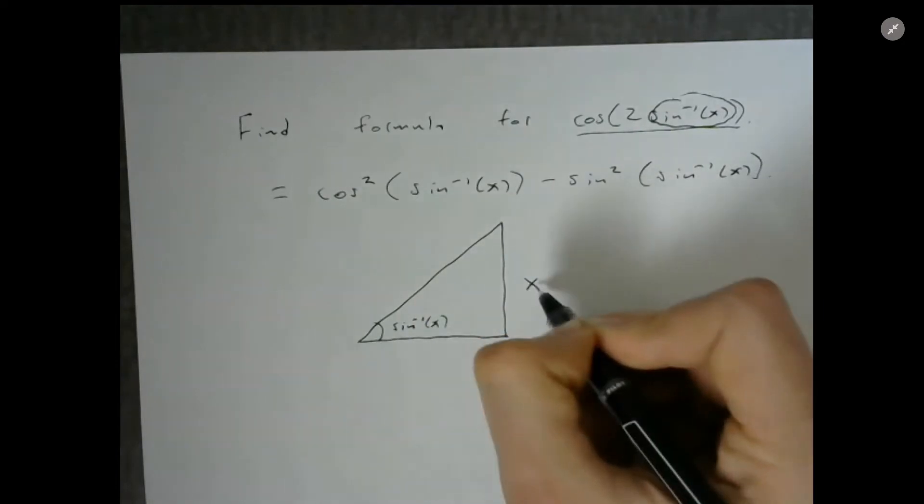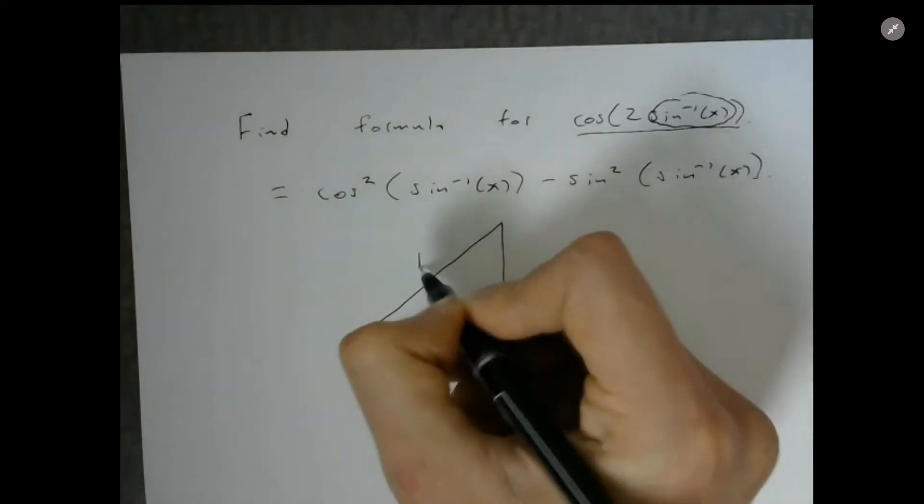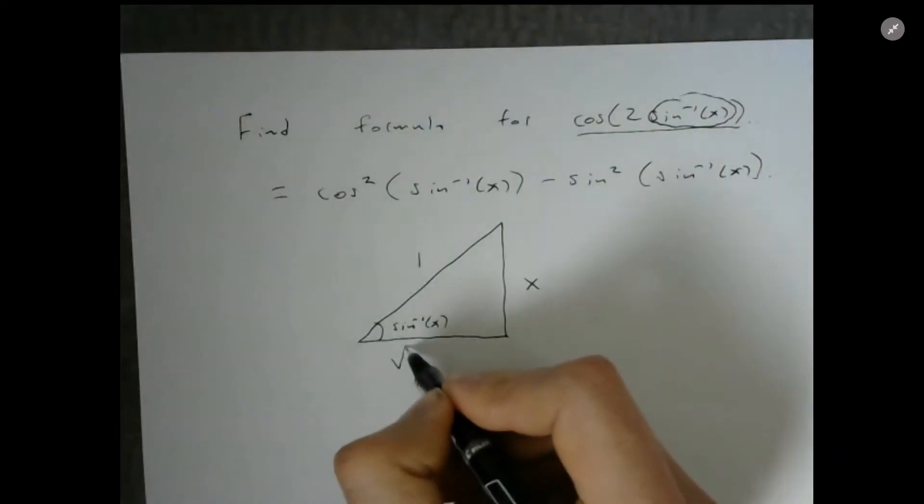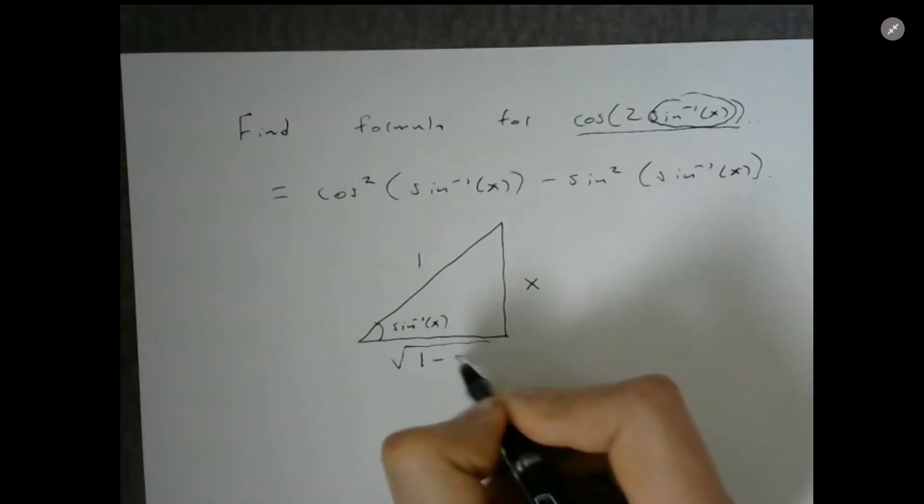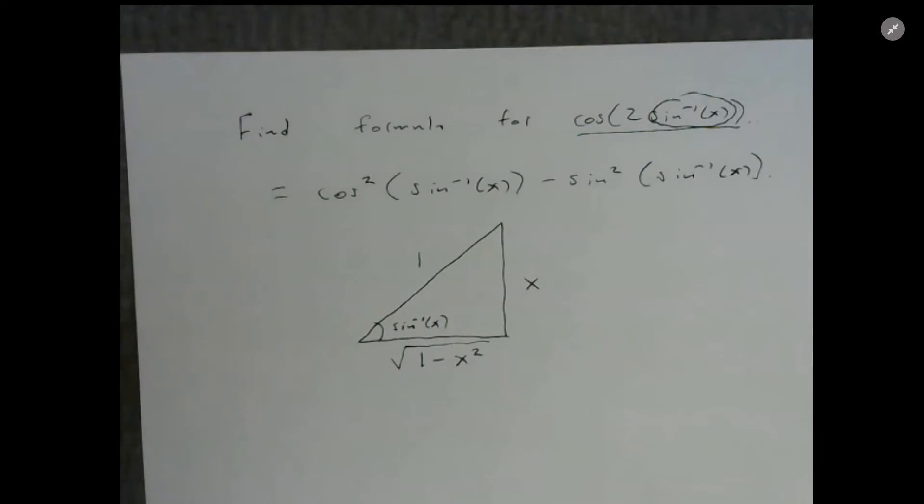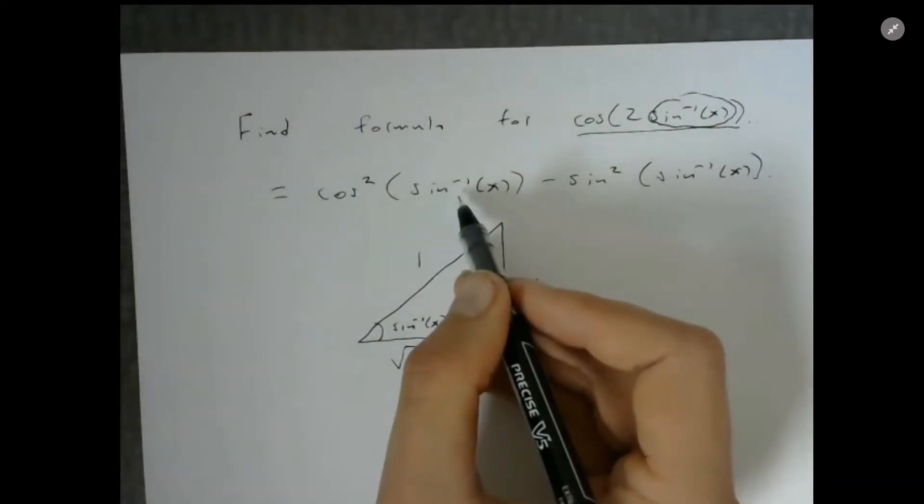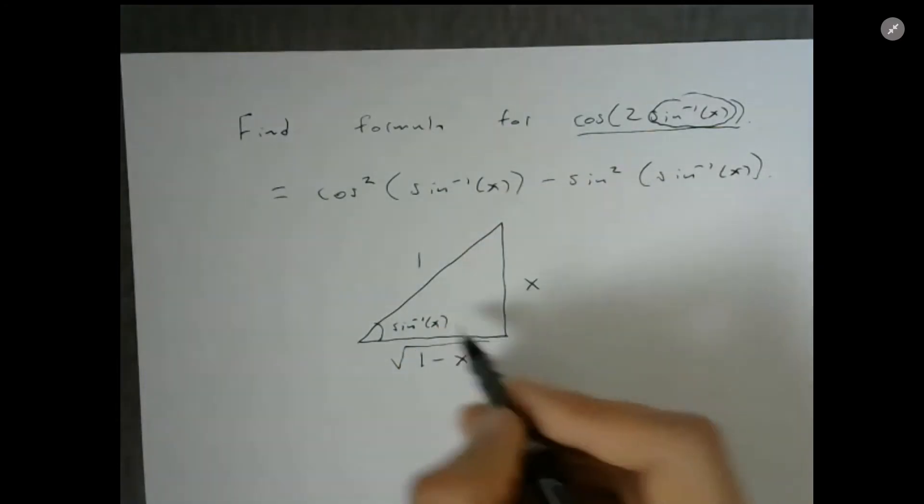From here we can use the Pythagorean theorem to figure out that this side length is the square root of one minus x squared. Now I'm going to look at the cosine of this angle, which is going to be adjacent over hypotenuse.